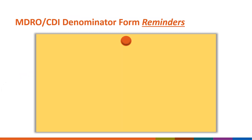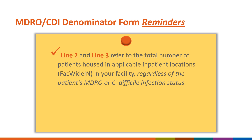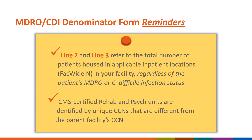As a reminder, the LabID denominator form only collects the total number of patient days and admissions and is not concerned with the infection status of any of the patients. All patients housed in the applicable units should be counted in the denominators as they represent your population at risk. Also remember that CMS certified psych and rehab units are identified by a unique CCN that is different from the acute care hospital's CCN.